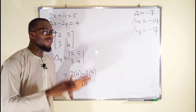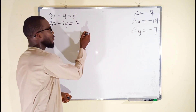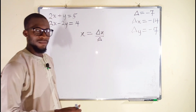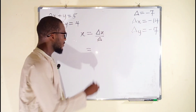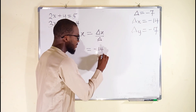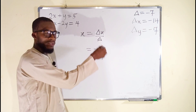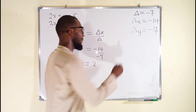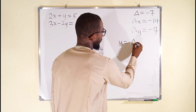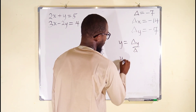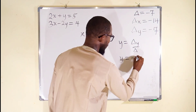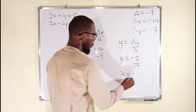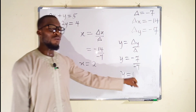Next, we want to find the value of x. To find x, we divide the determinant with respect to x by the main determinant: negative 14 divided by negative 7. The negatives cancel, and 14 divided by 7 is 2, so x equals 2. To find y, we divide the determinant with respect to y by the main determinant: negative 7 divided by negative 7 equals 1. Therefore, x is equal to 2 and y is equal to 1.